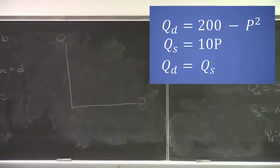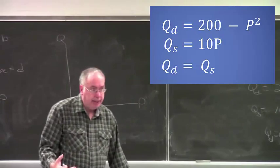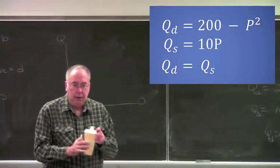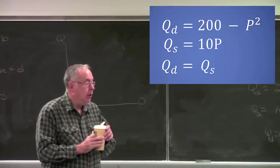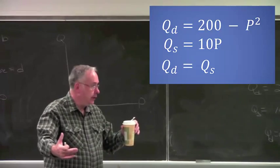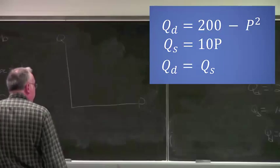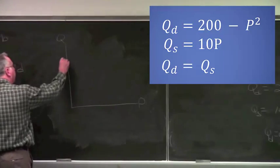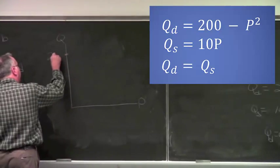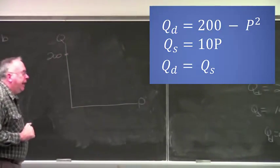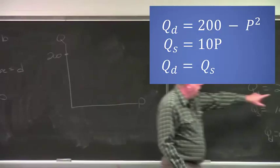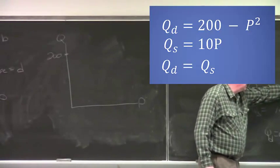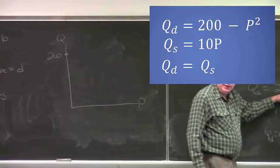If I were to graph this demand curve, what would it look like? What would its general shape look like? Okay. What about the vertical intercept? The vertical intercept here is 200. If the price were zero, then the quantity demanded would be 200. That's the vertical intercept.